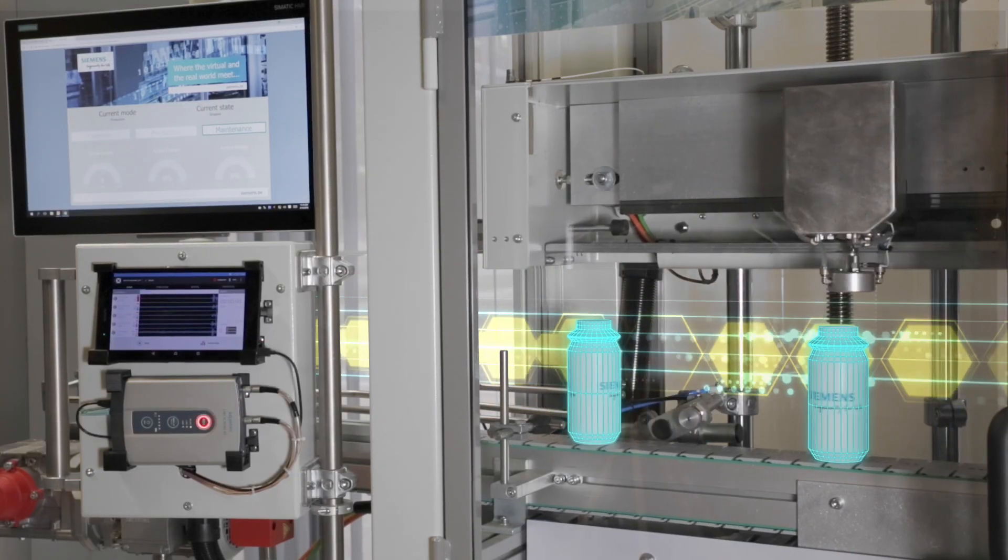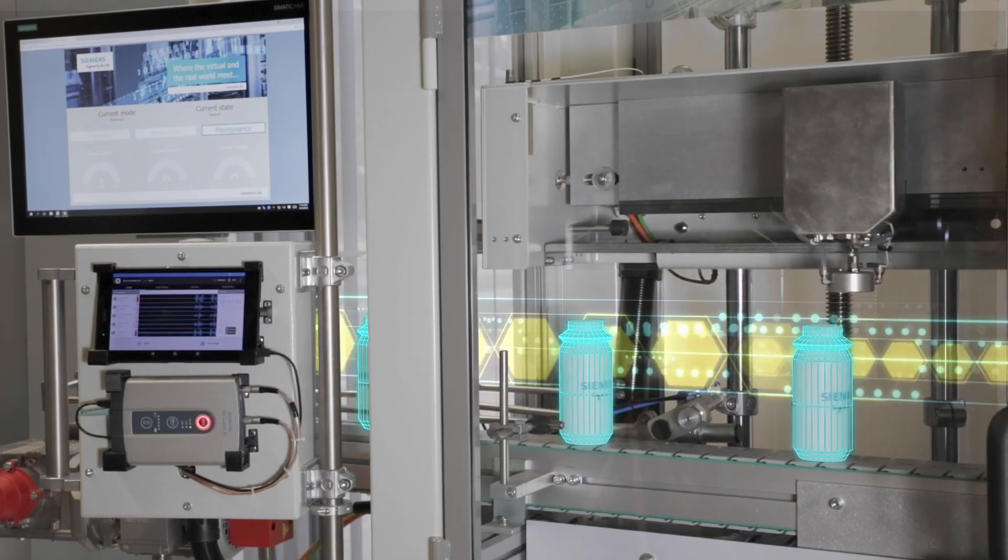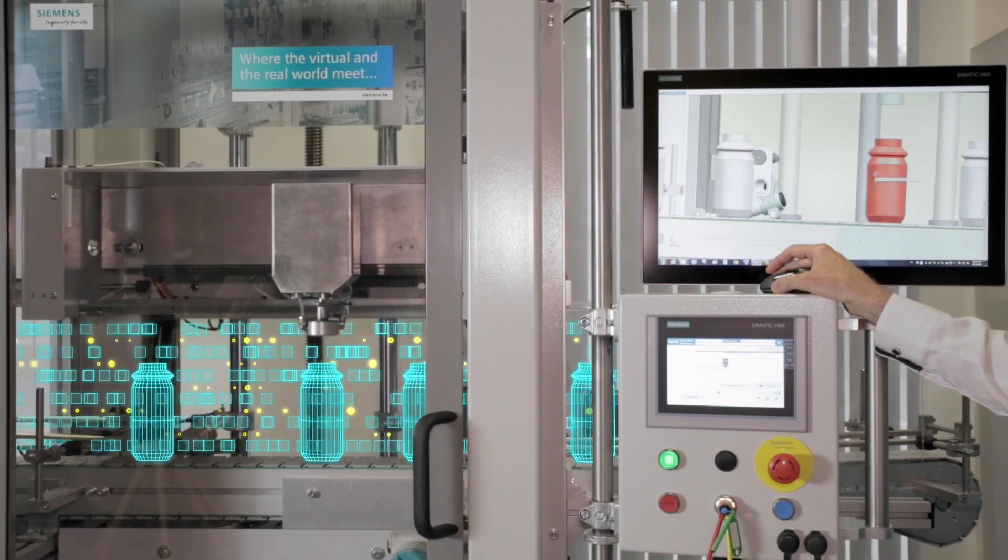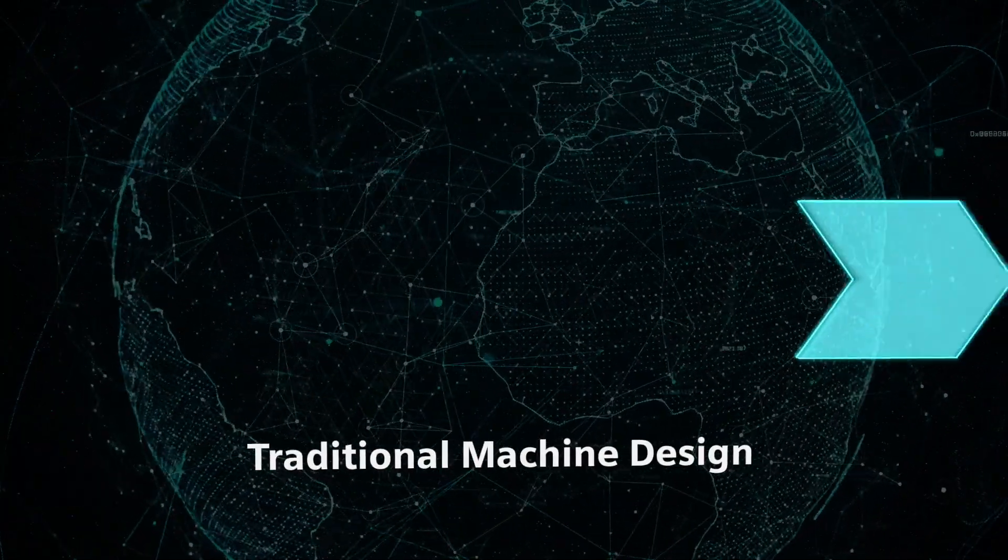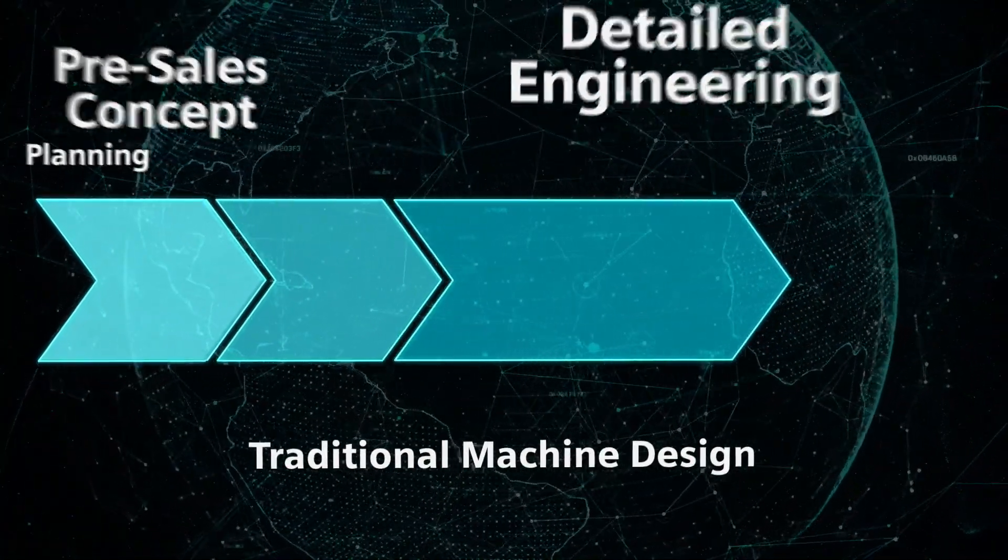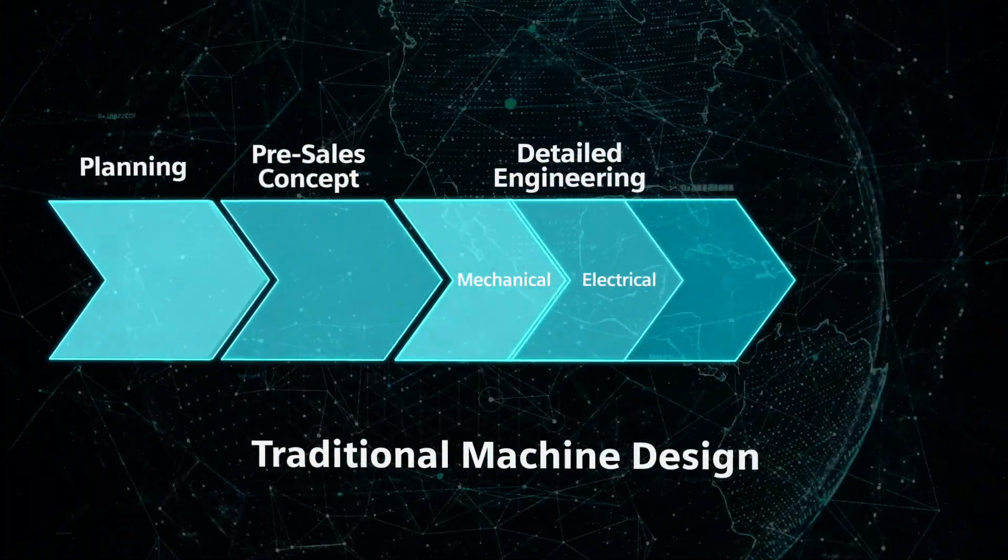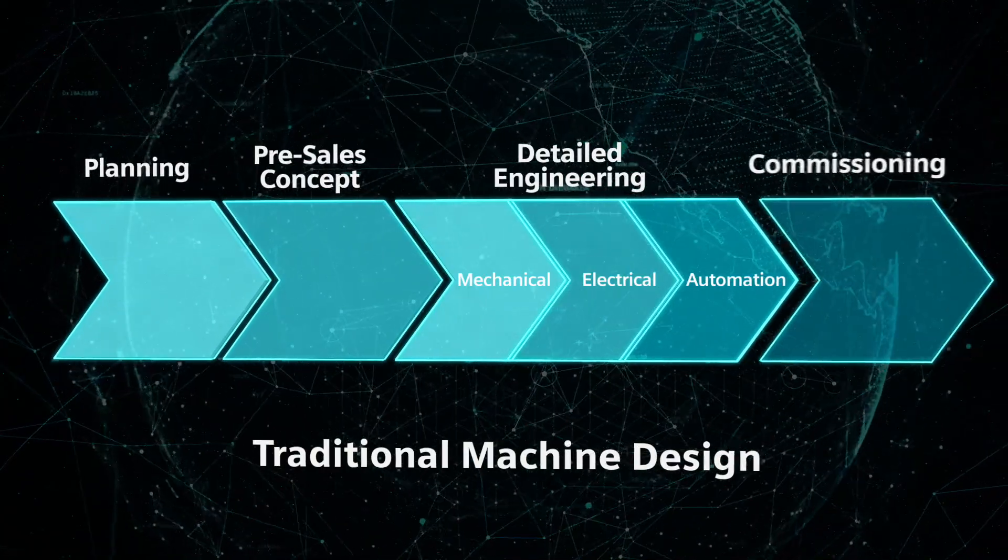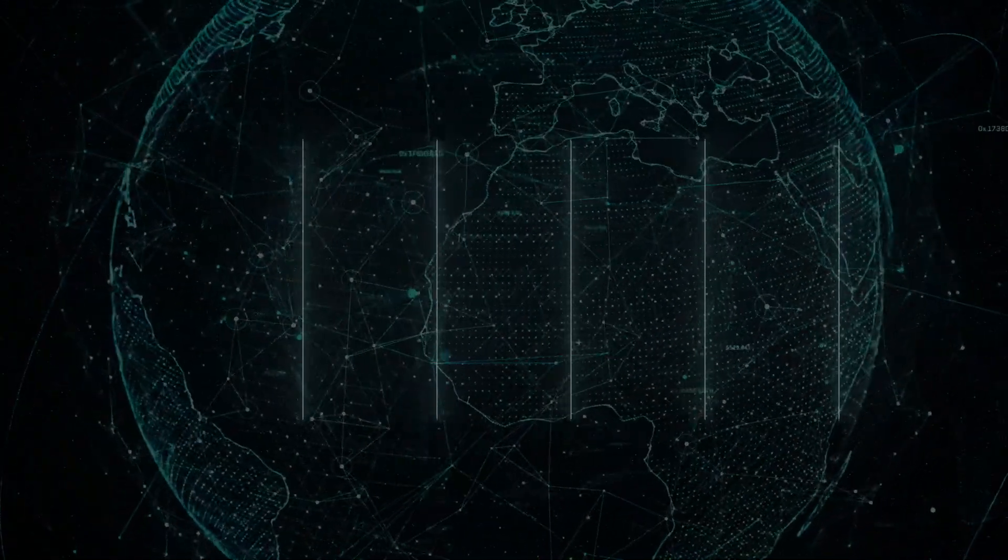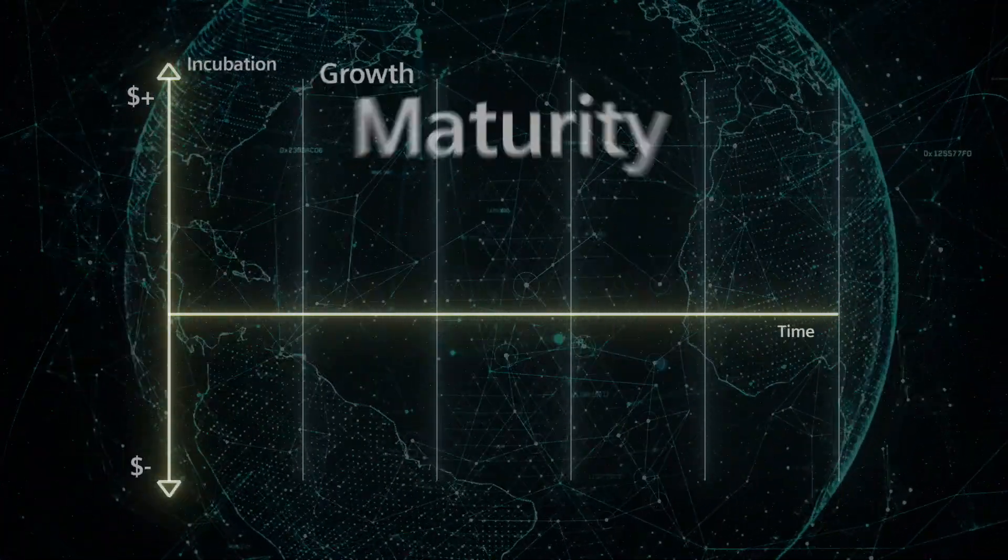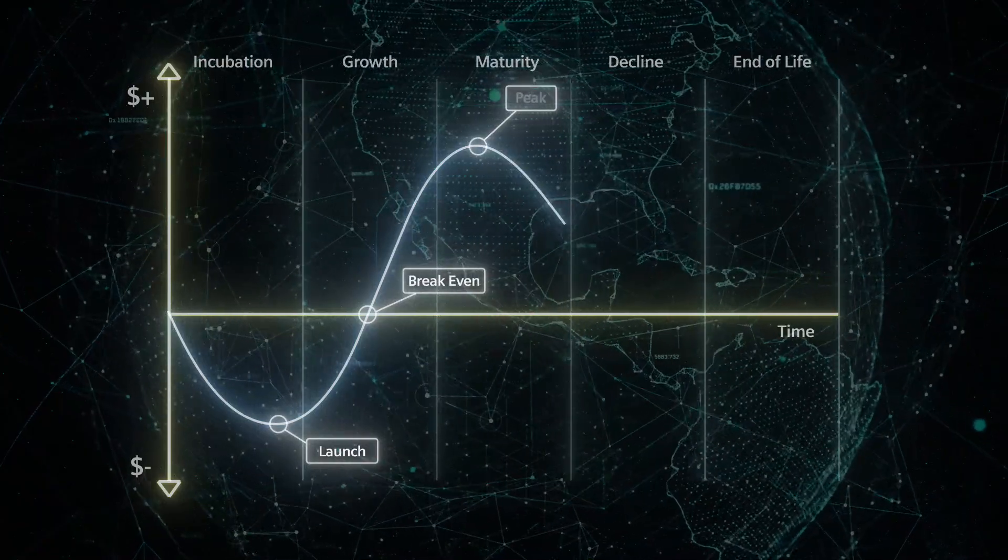Digitalization is changing everything. To stay competitive, machine builders need to optimize their processes across the whole machine lifecycle. Traditional machine development follows a sequential process from early specification through mechanical and electrical design to automation engineering and the commissioning of the machine. Today, complex problems are often detected late in the process that pushes the product launch out farther.